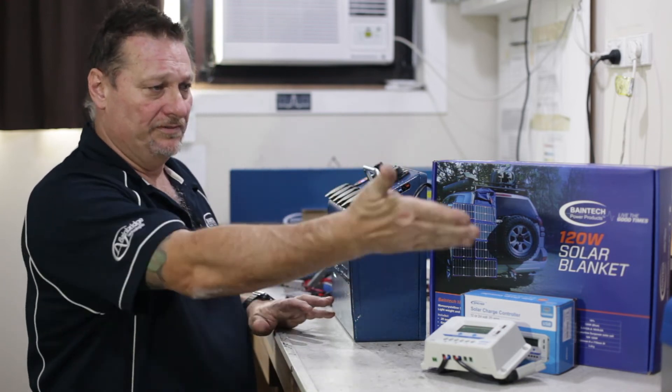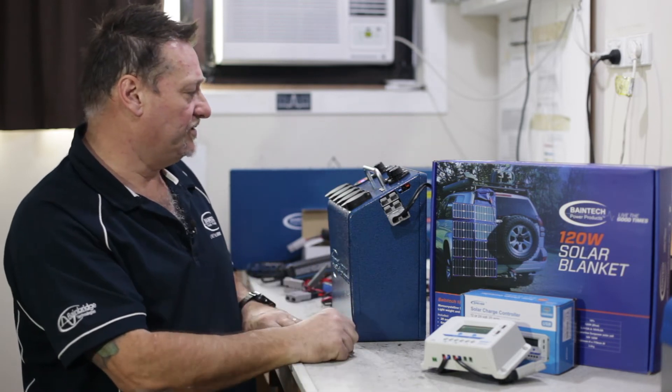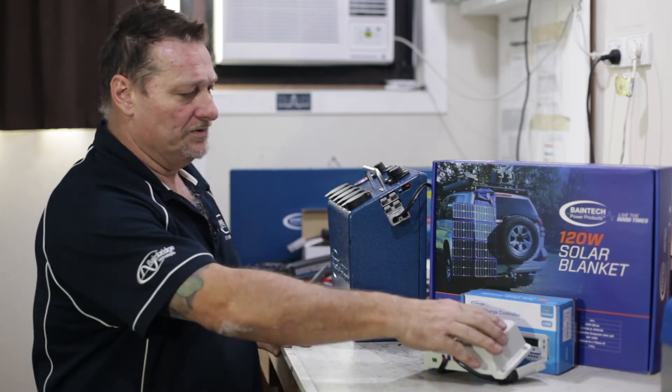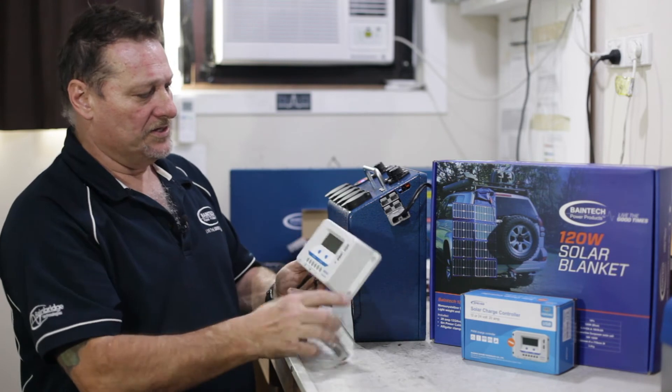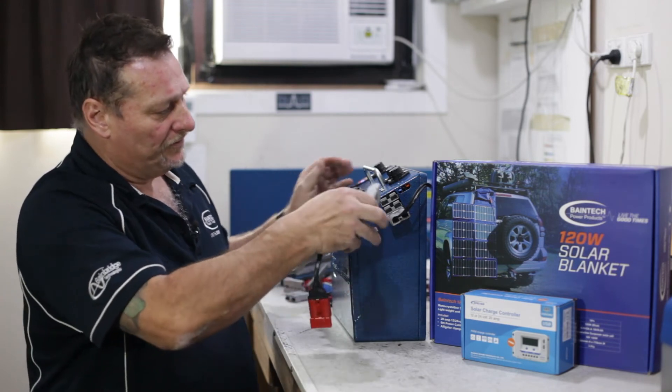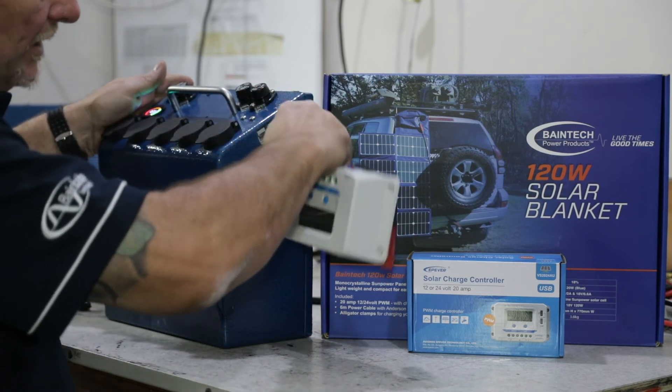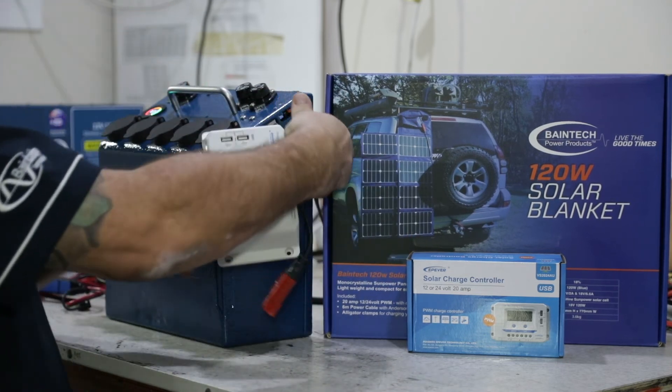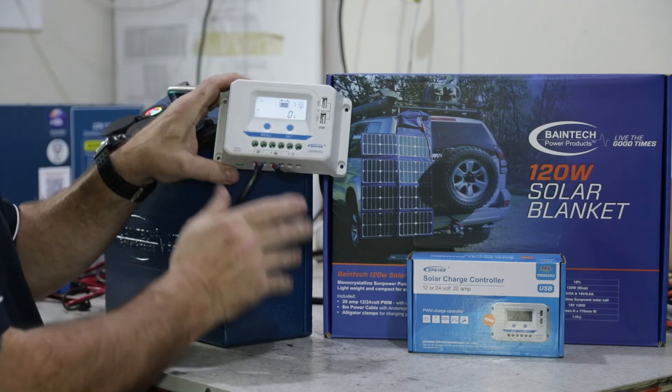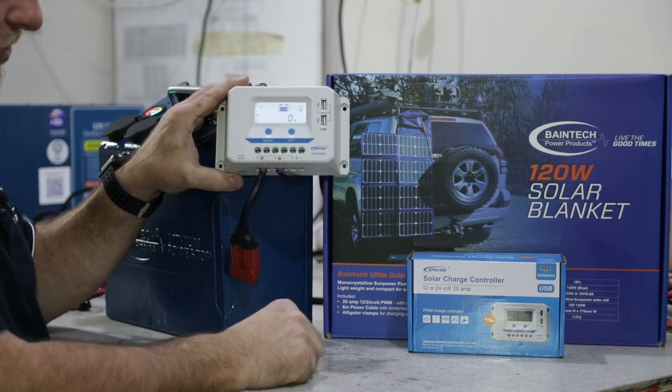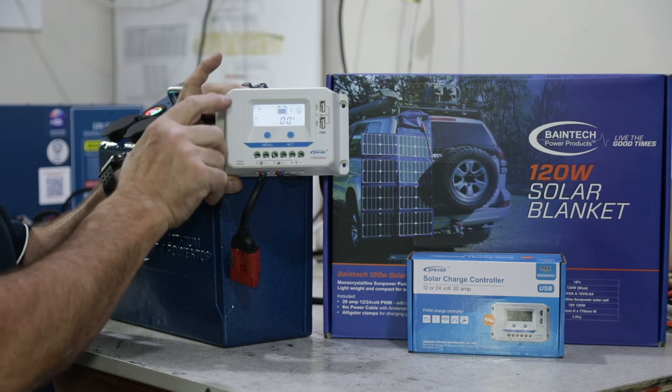You can have solar going in. At the moment this plug here is for the fridge and it's running the fridge no problems at all. When you plug the solar controller in for the first time you need to make sure that you plug it into the battery first anyway.